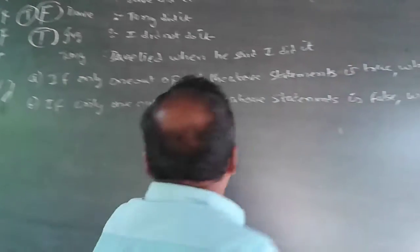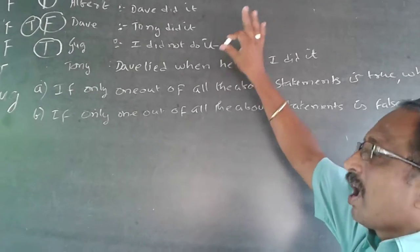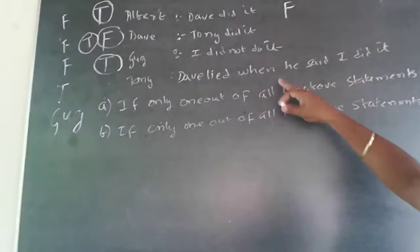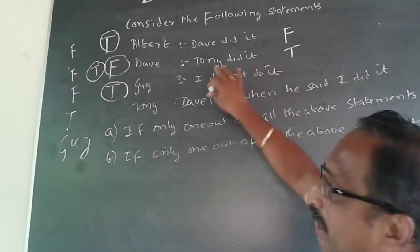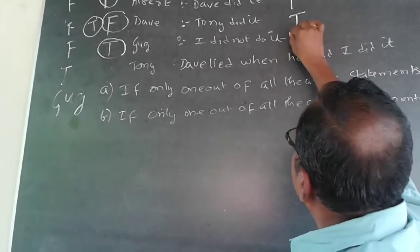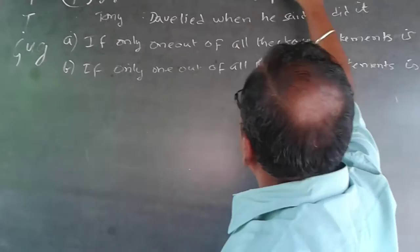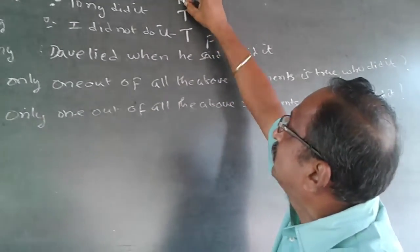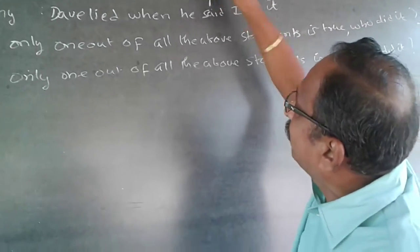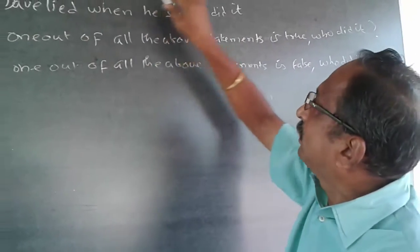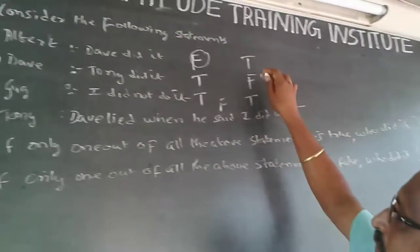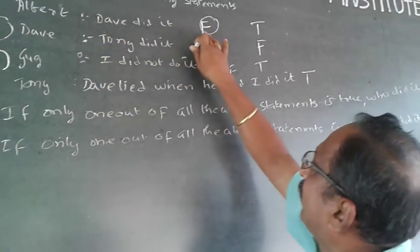Similarly for D: if only one out of the above four statements is false, I fix one statement as false and check the other three become true. I check Albert as false — the moment Dave is true, Tony did it. Gug says I did not do it, that becomes true. But Tony says Dave lied; since I presume Dave to be true, Tony becomes false — I cannot have two false statements, so Albert being false is wrong. Then I check Dave to be false. If Dave is false, the other three must be true. Albert is true — Dave did it. Gug says I did not do it — that is also true. Tony says Dave lied — since Dave is false, that is also true. So three true, one false. Dave has lied, and because Albert is true, Dave did it. The answer is Dave.